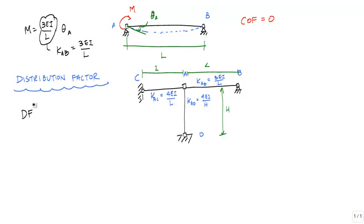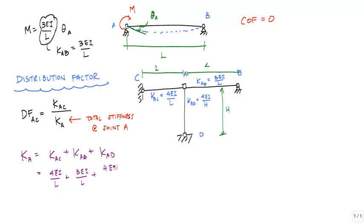The distribution factor is kind of the fraction that each member gets. So, for distribution factor for AC, for member AC from joint A, is equal to KAC divided by the total stiffness at joint A. KA is equal to the sum of KAC plus KAB plus KAD. Essentially, the stiffness of each member framing into that joint. And so, if I worked out some more stuff, this would be 4EI over L, 3EI over L, plus 4EI over H.